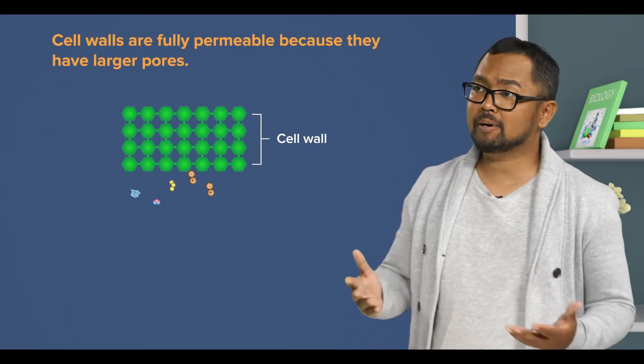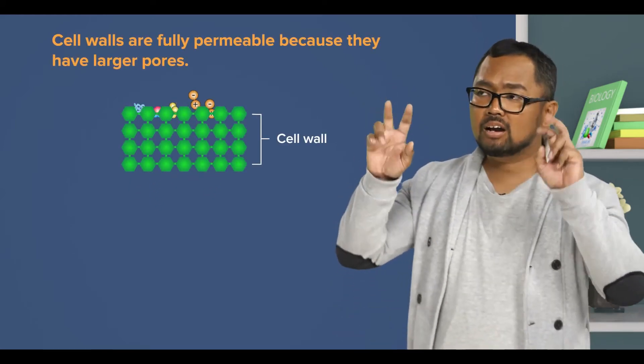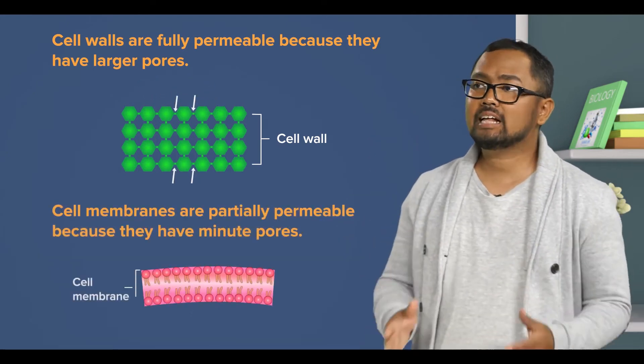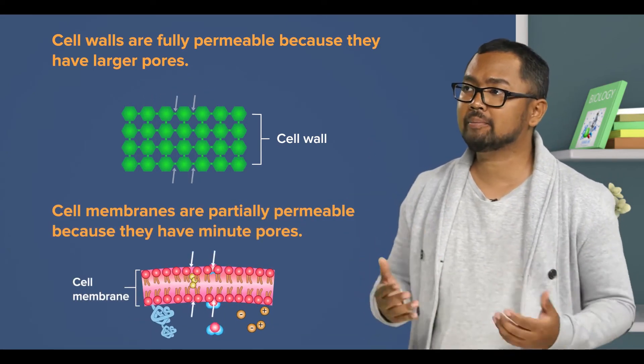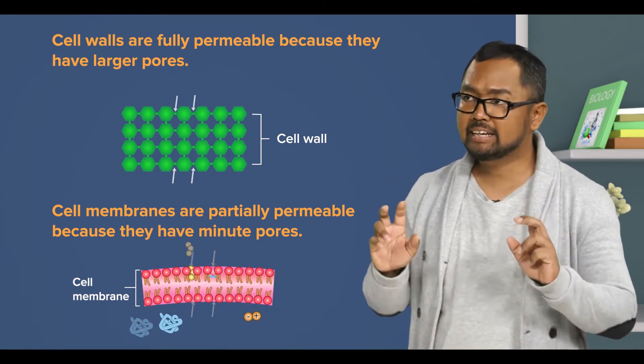That's right. And cell walls are fully permeable because they have larger pores. Cell membranes are partially permeable because they have minute pores.